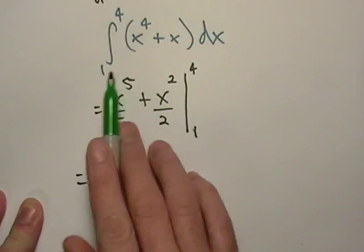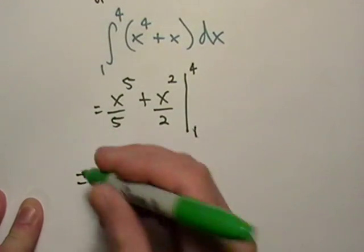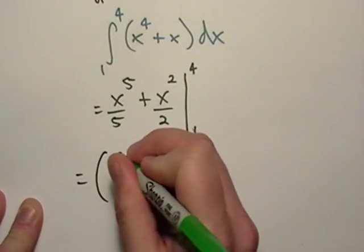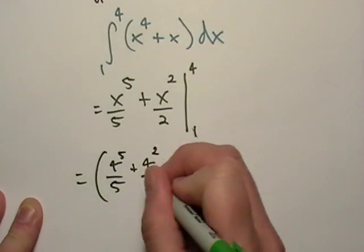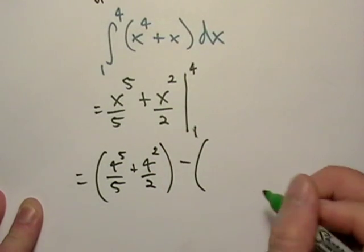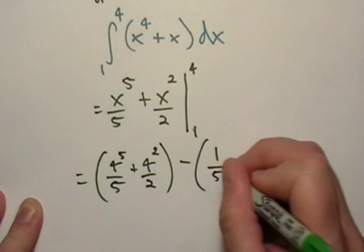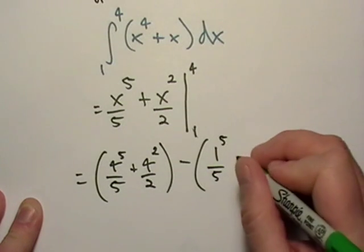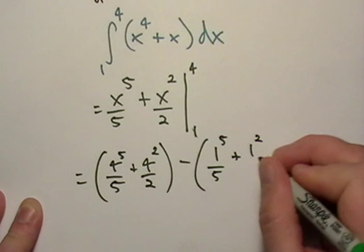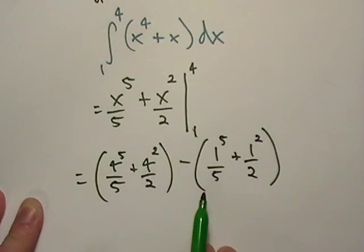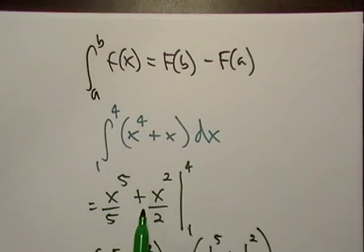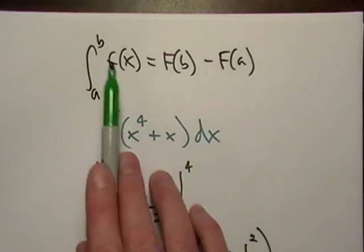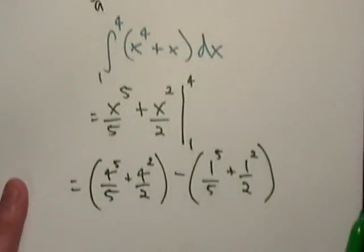It's easy to mix things up here, so go ahead and put this in parentheses. So I'm going to write it with four plugged in, minus the same expression with one plugged in. That's the same as the formula — the antiderivative evaluated at B, and then we subtract the antiderivative evaluated at A.